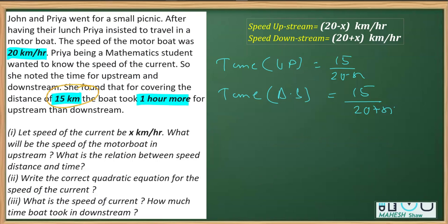Now, we are given the difference in time. The difference in time is 1 hour. So clearly, when you go by upstream, it takes longer time. That means slower the speed, the greater the time taken. That means this minus this will give you the difference of time, which is 1 hour. So I'll write here 15 over 20 minus x minus 15 over 20 plus x is equal to 1.